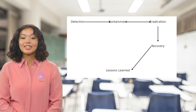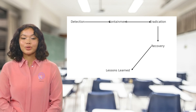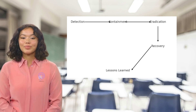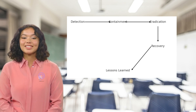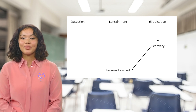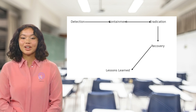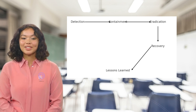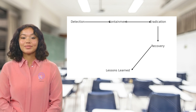What happens if there's a breach? Responding quickly is critical. This flowchart shows key steps: detect the breach, contain it, eradicate the issue, and recover. For a healthcare company, one step might be notifying affected patients and securing compromised systems.